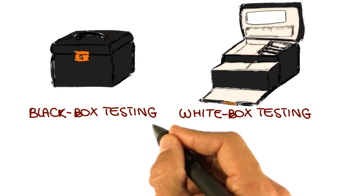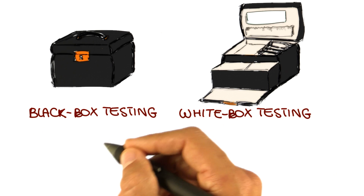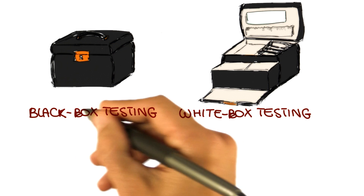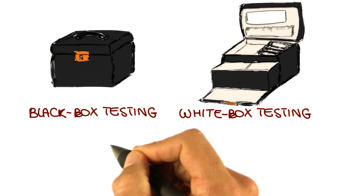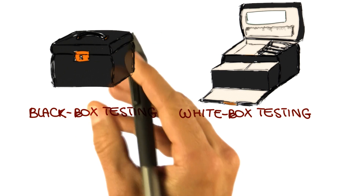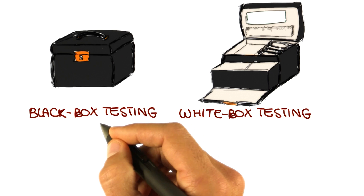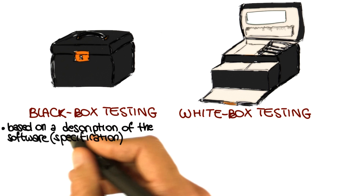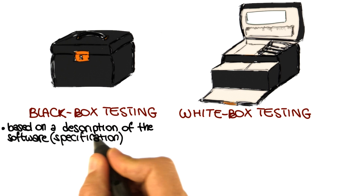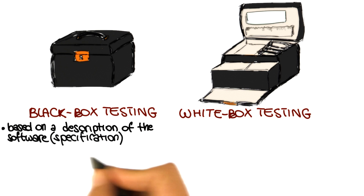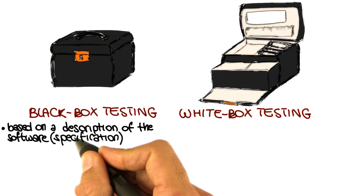Black box testing is the kind of testing in which we consider the software as a closed box — that's why it's called black box. So we don't look inside the software, we don't want to look at the code. We're just going to look at the description of the software. This is testing that is based on a description of the software, which is what we normally call a specification for the software.